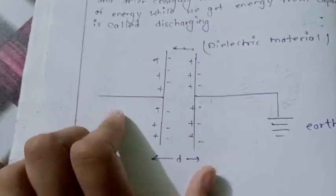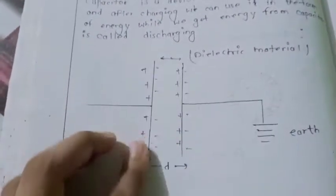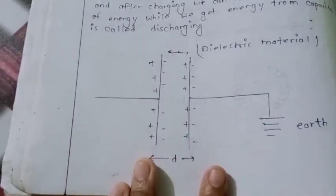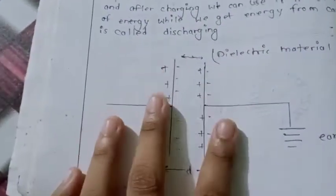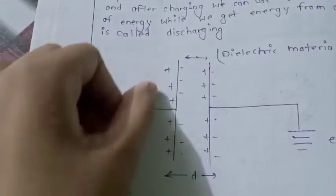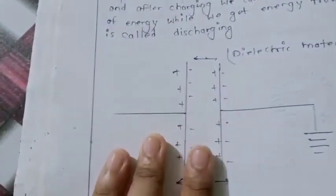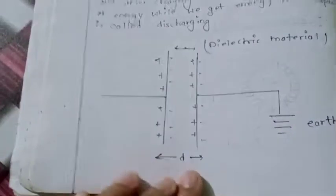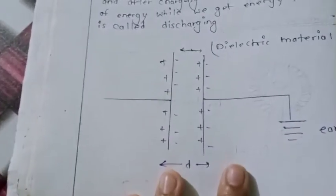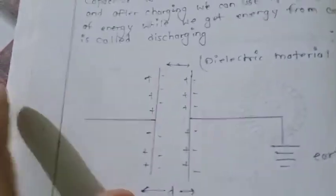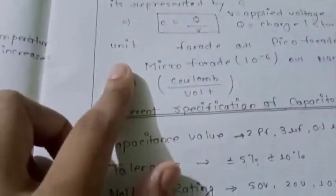The capacitor symbol is here, with positive and negative charges on two plates separated by distance d. One plate is positive, so the other will have negative charges. The formula is C is equal to Q by V.